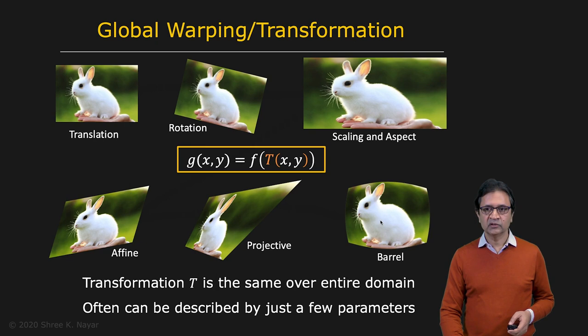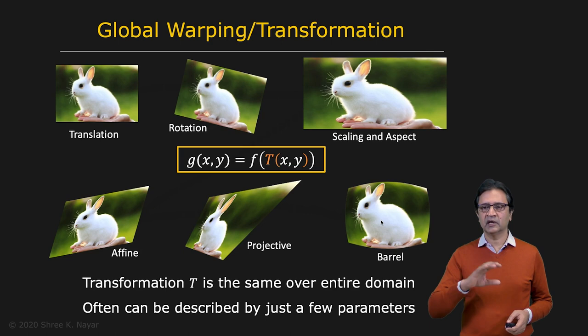You can also include in this class things like geometric distortions, such as barrel distortion. So the transformation T that you're applying in each one of these cases is the same over the entire image, the domain of the image. And it can often be described with just a very small number of parameters.